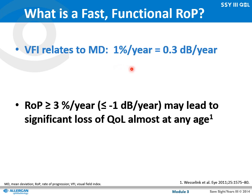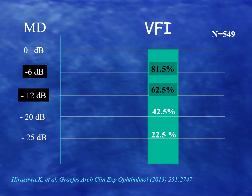Keep in mind that for each decibel change in mean deviation there is a 3 percent change in visual field index. A rate of progression equal to or higher than 3 percent visual field index per year, or one decibel per year, can lead to a significant loss of quality of life at almost any age. We classify glaucoma as mild, moderate, or severe depending on the mean deviation, and there are equivalent percentages for these limits in visual field index.